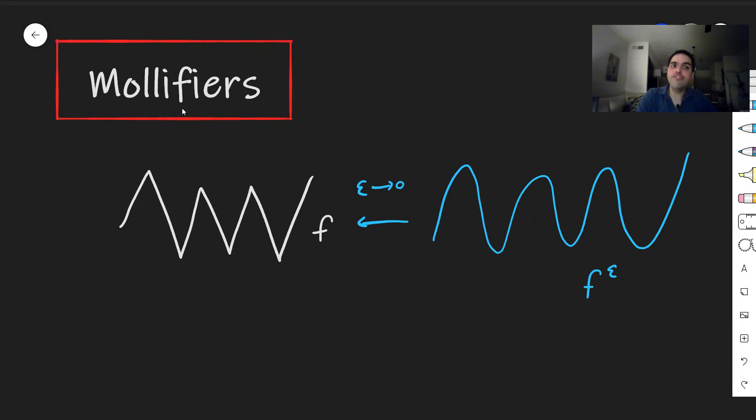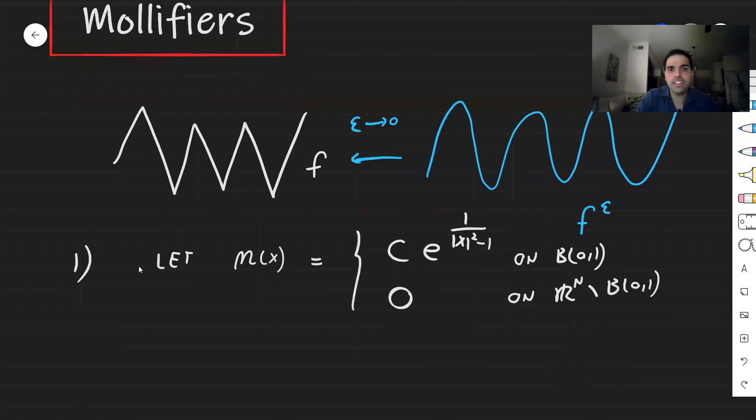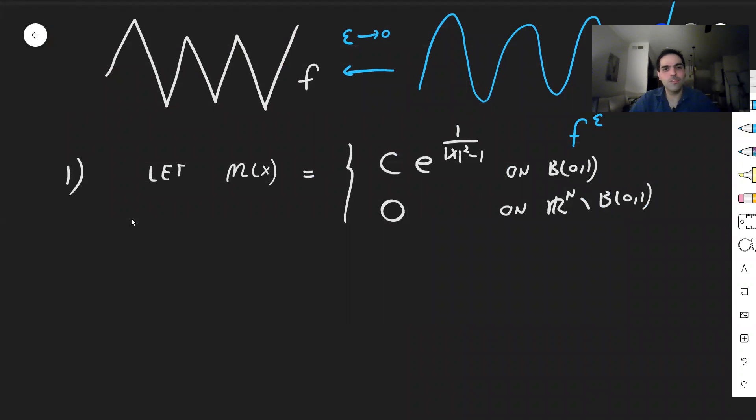And we'll do that using mollifiers, which first of all uses what's called a bump function. So let eta of x be a super smooth function given as follows: a constant times e to the 1 over absolute value of x squared minus 1 on the unit ball centered at 0 and 0 everywhere else. So on R^n, except for B(0,1). So c is just a constant in such a way that the integral of eta is 1. So that's just called normalization.